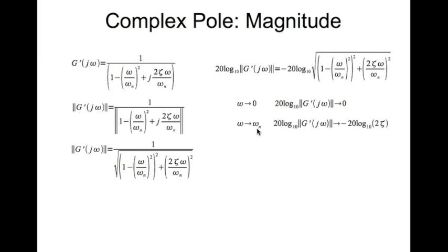As ω tends to ωₙ, the term (1 - ω/ωₙ²) becomes 0, and ω/ωₙ becomes 1, so you end up with 4ζ². The square root of that is 2ζ, giving minus 20 log base 10 of 2ζ. Notice that when ζ becomes very small, log base 10 of 2ζ becomes a very large negative number, and multiplied by minus 20 gives a very large positive number. At ζ equal to 0 this becomes infinite — that is essentially called resonance. If a system with zero damping is vibrated at the natural frequency, the resultant amplitude becomes infinite.